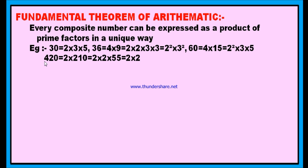Now, go for another example: 420. This 420 you can write as 2 into 210. Again, you can split 210 as 2 into 105, and you can split 55 as 5 into 11. Therefore, finally, 420 is equal to 2 into 2 into 5 into 11. 2 into 2 is 2 square into 5 into 11. Therefore, 420 can be written as the product of prime factors as 2 square into 5 into 11. This is the fundamental theorem of arithmetic.